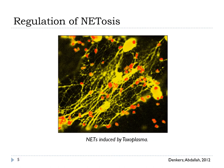Vital NETosis occurs independently of cell death and involves the rapid expulsion of nuclear chromatin, accompanied by the release of granule proteins through degranulation. NETosis must be tightly regulated to prevent pathology. The size of microorganisms is one of several factors that influence NETosis. Detection of pathogen size depends on the competition between NETosis and phagocytosis for access to elastase.